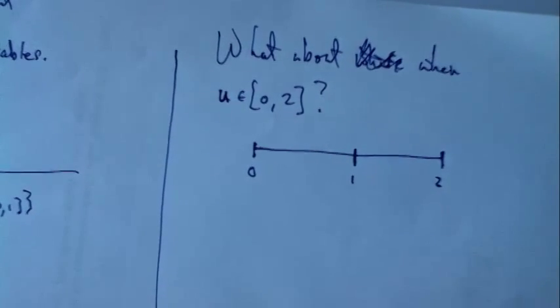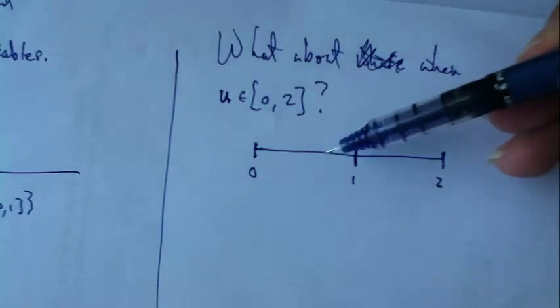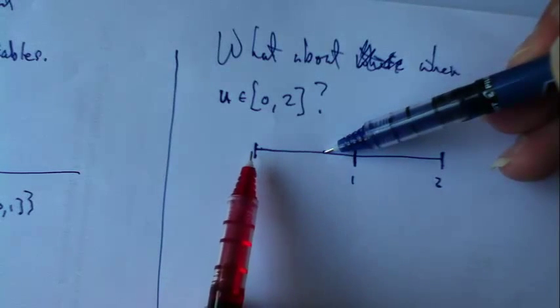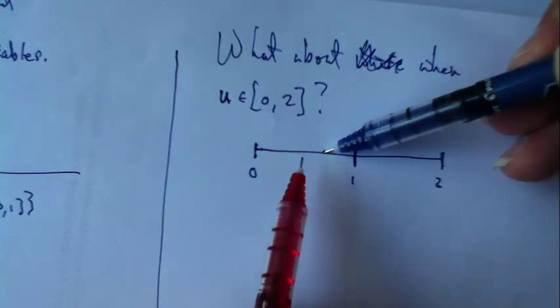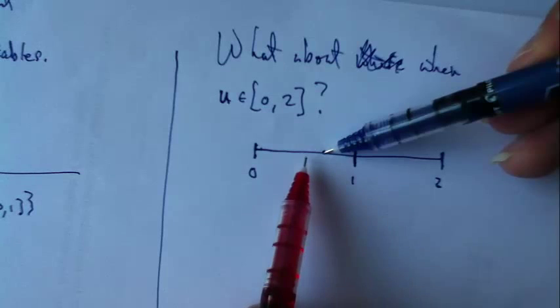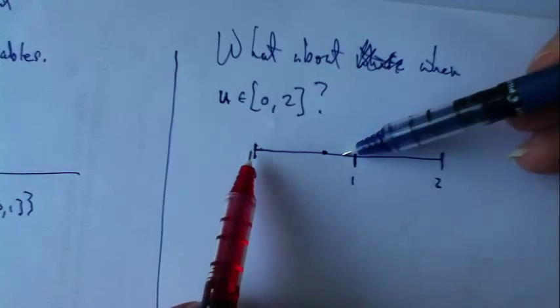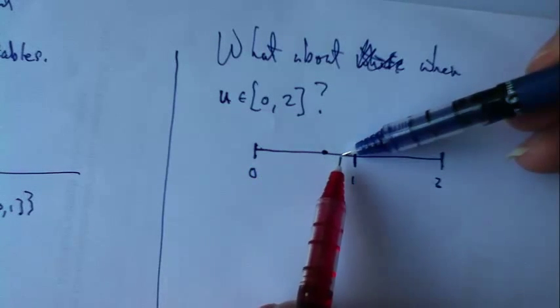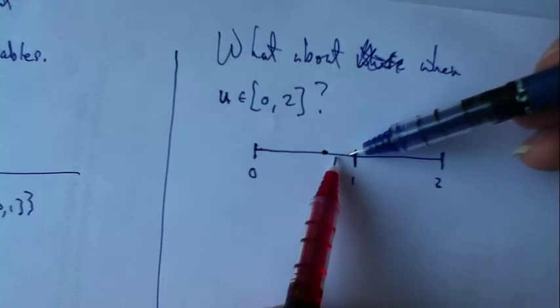If I put some thought into what can actually happen - what if u is here? Then x can take on any value between 0 and u, and y takes on the value of the difference. If u is here, again, x can be allowed to vary anywhere from here all the way up to here, and then y takes on the value of the difference.